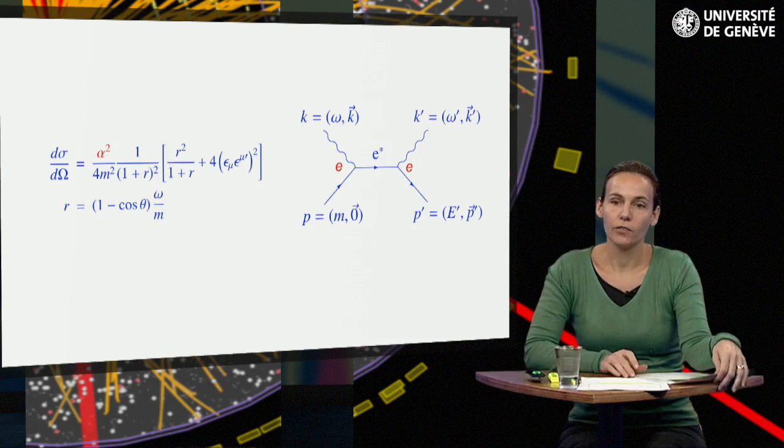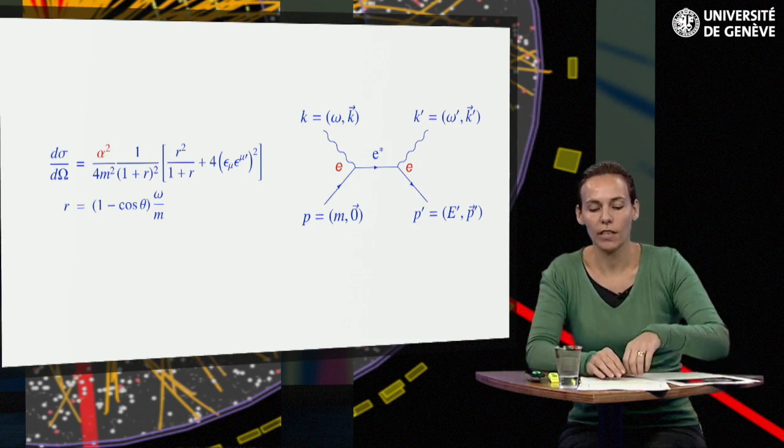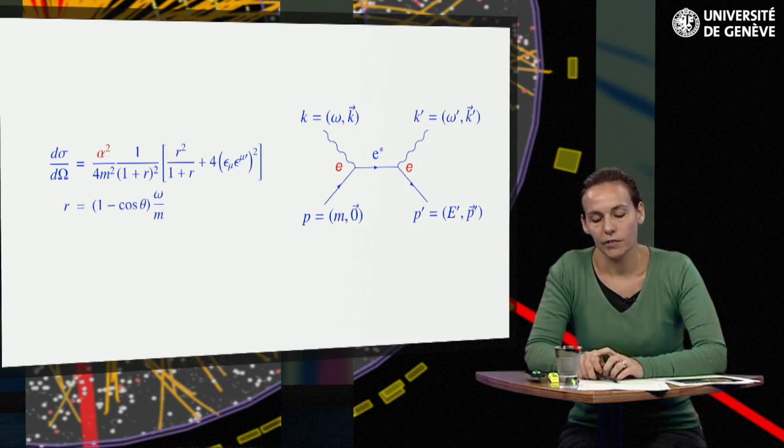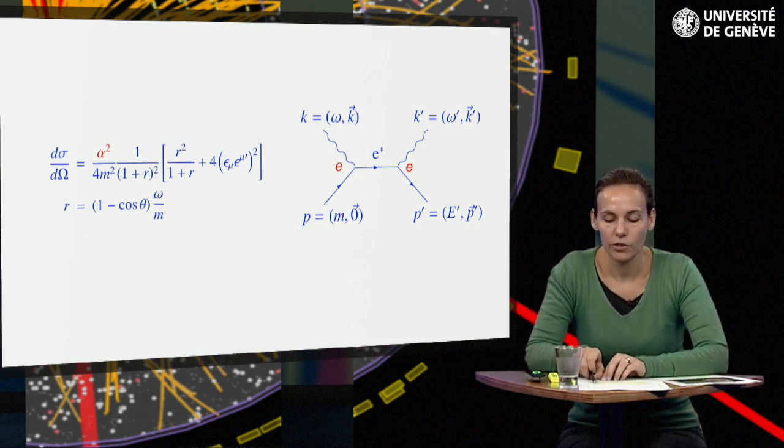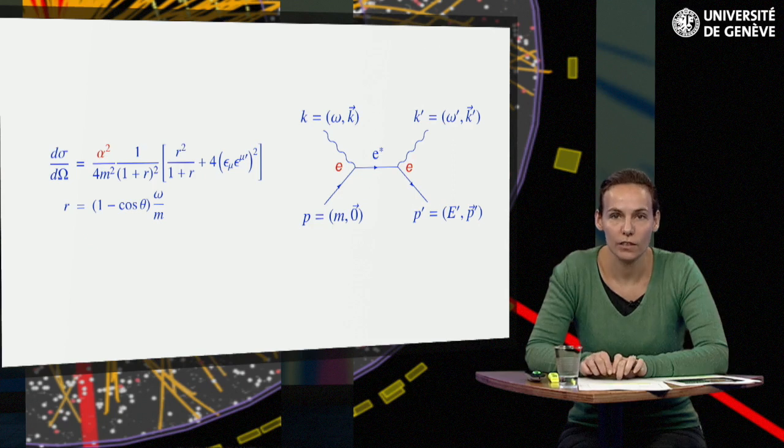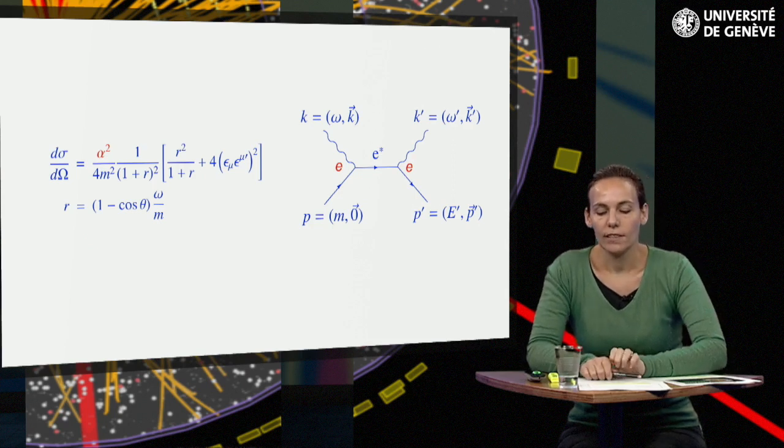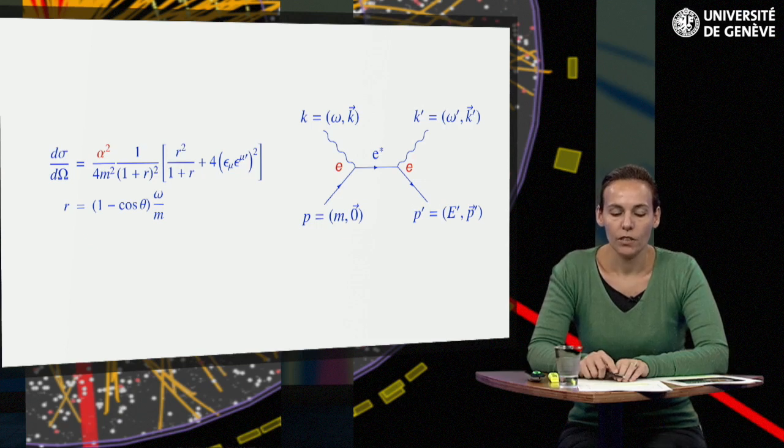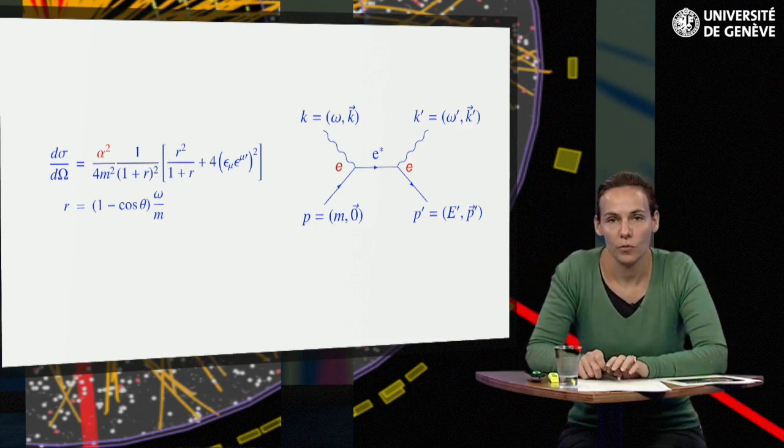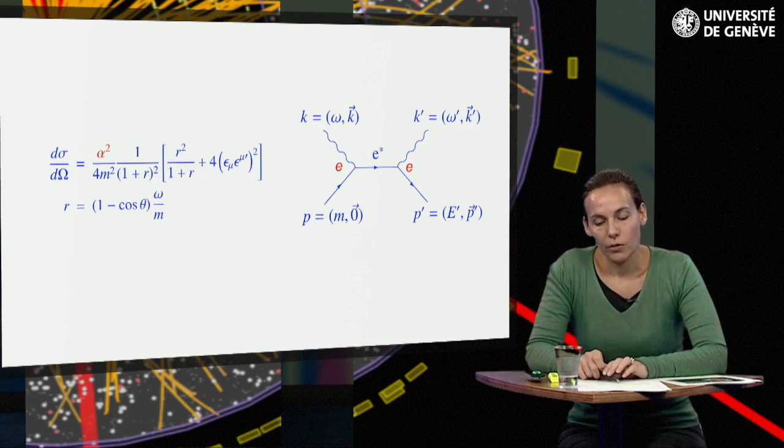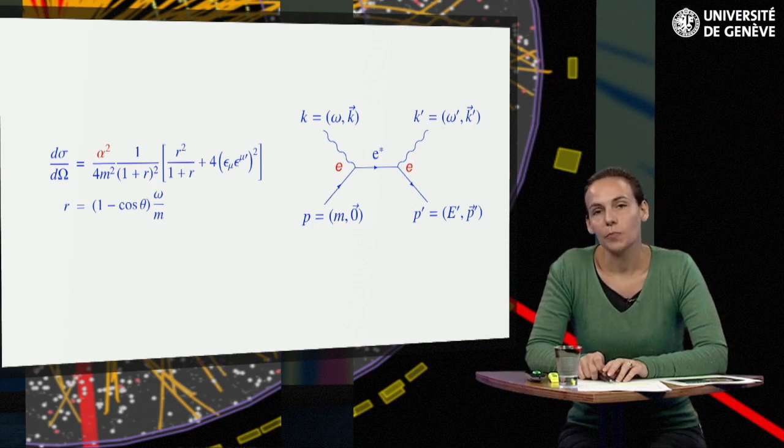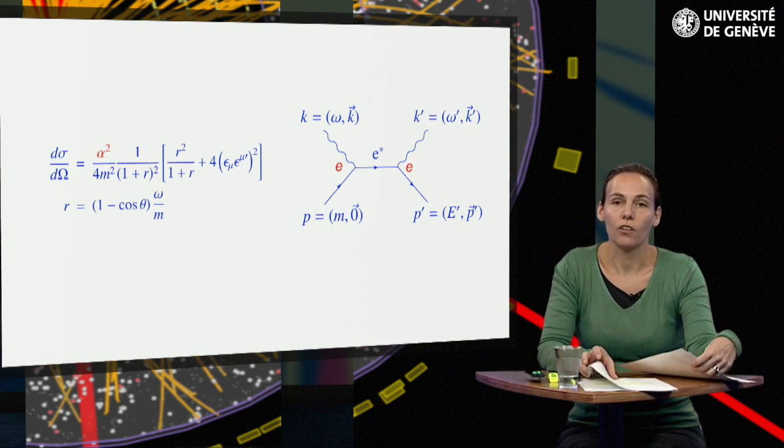For the differential cross-section one finds the so-called Klein-Nishina formula. Two factors are of particular interest. The first is the factor alpha squared which determines the order of magnitude of the cross-section. It results from the fact that each vertex introduces a factor of e when constructing the invariant amplitude M. Consequently the cross-section which is proportional to the modulus square of M is proportional to the square of the fine structure constant alpha.